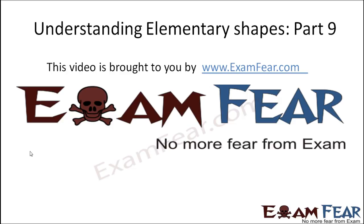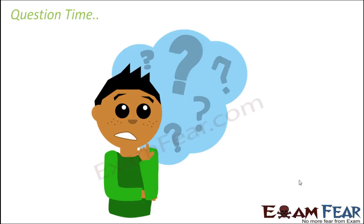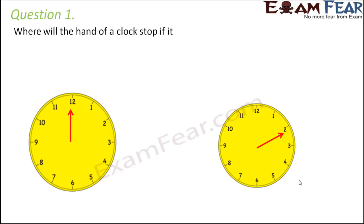Hello friends, this video on understanding elementary shapes part 9 is brought to you by examfear.com. Based on all that we learned about angles, let's try some questions. Question number one: where will the hand of a clock stop if it starts at 12 and makes half a revolution clockwise?